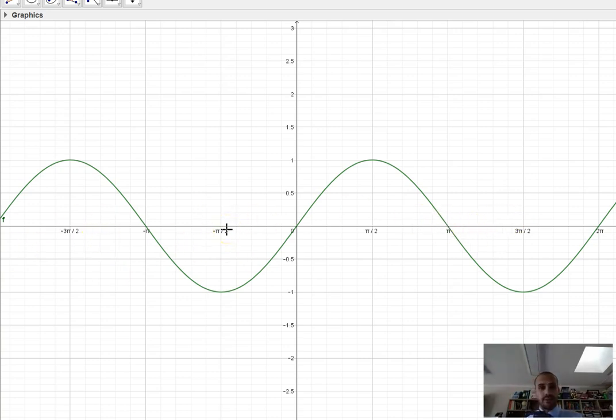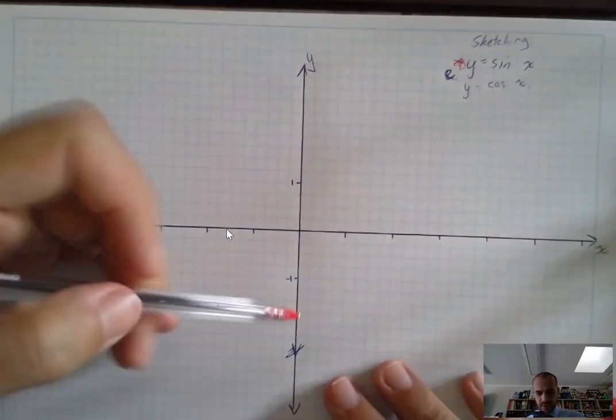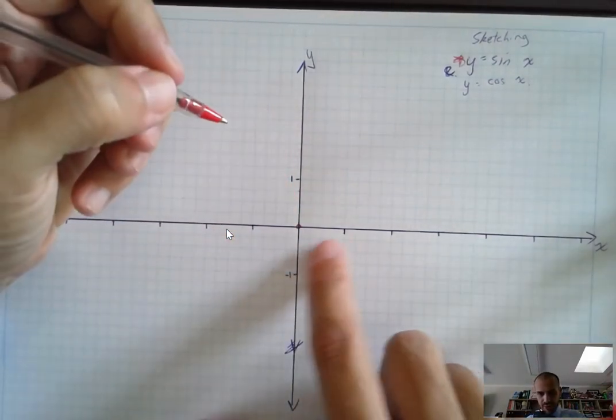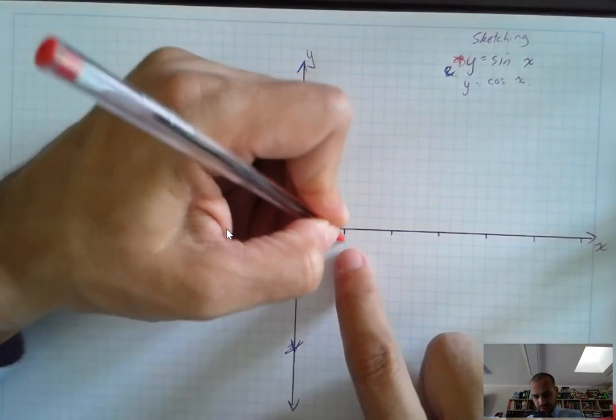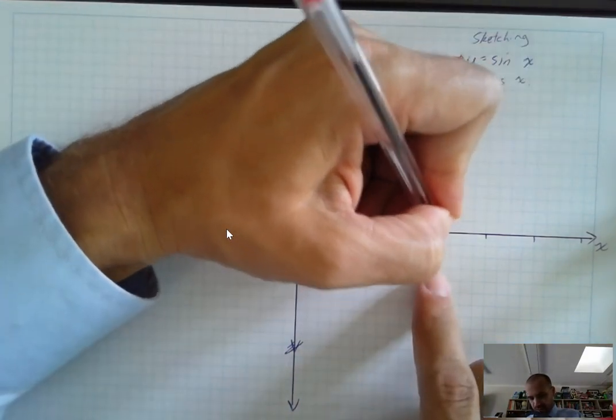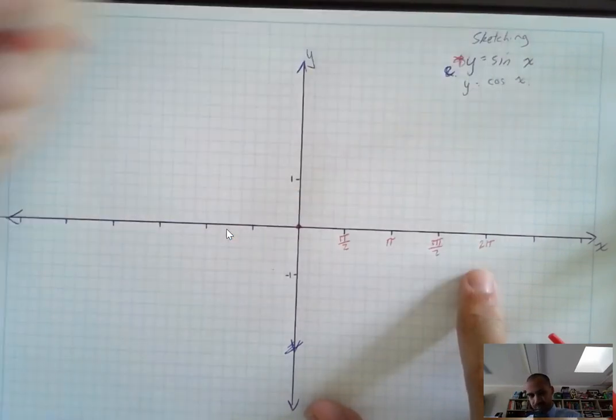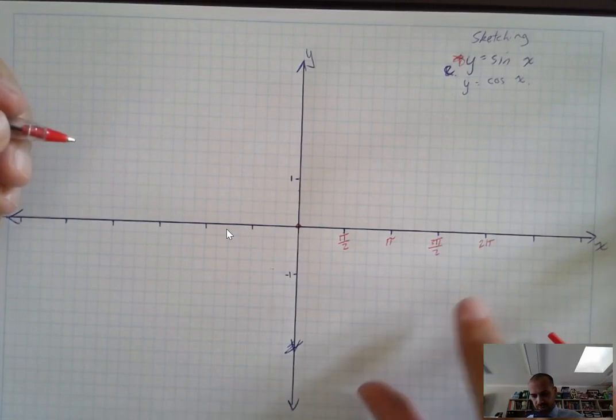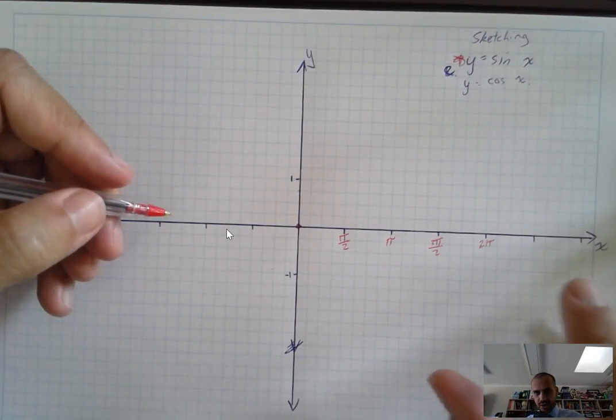All right, so now I'm going to sketch that on my actual bit of paper. X-axis, y-axis. I'm starting at the origin. Now I've gone every four squares here. I'm going to call this pi on two. This is pi. This is three pi on two and this is two pi. And I'm just going to move in the positive direction now. I'll keep moving forward in a second. We can go further than that, but we'll just go one at the moment.